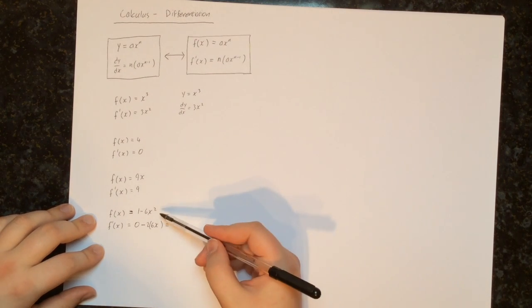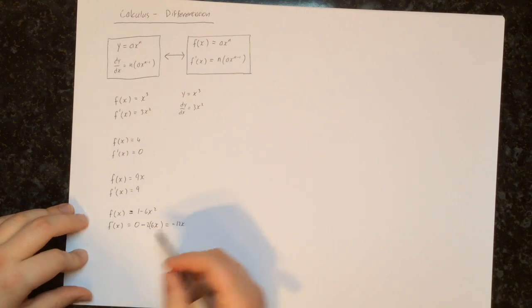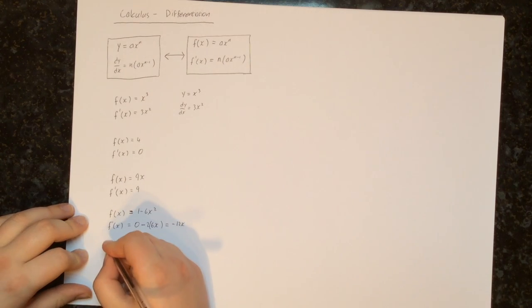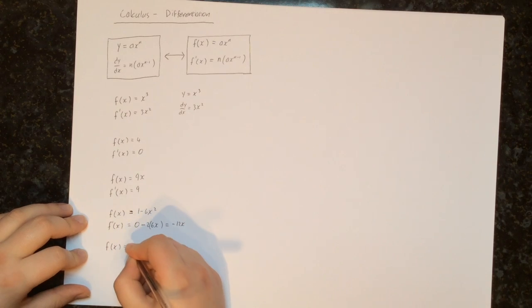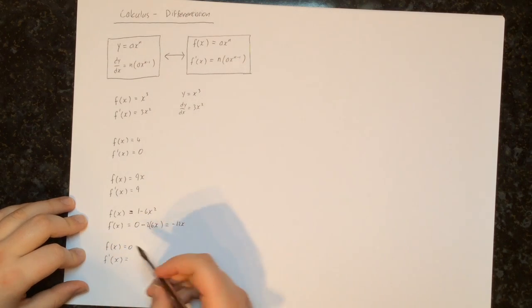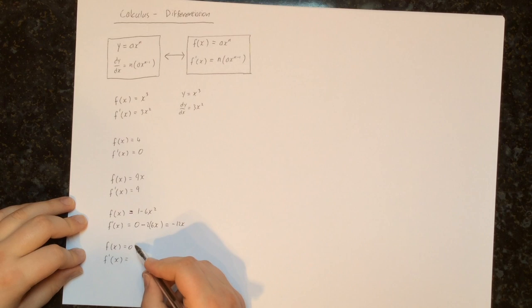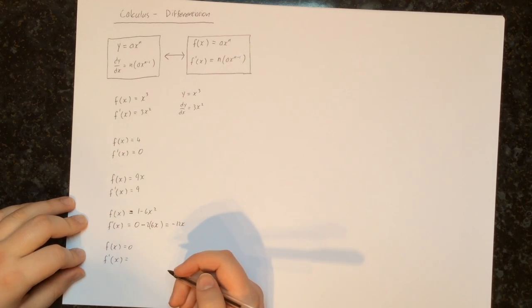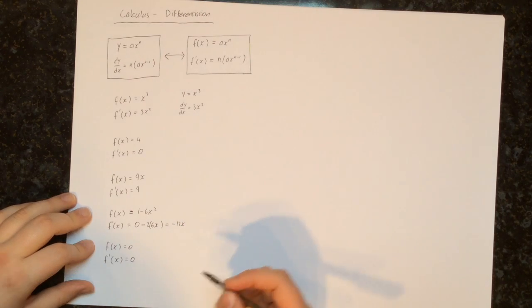So the derivative of 1 minus 6x squared is minus 12x. Next, let's try f of x equals 0. The derivative of 0 is 0 because 0 is just a constant — there is no x here, and the derivative of any constant is 0, even 0 itself.